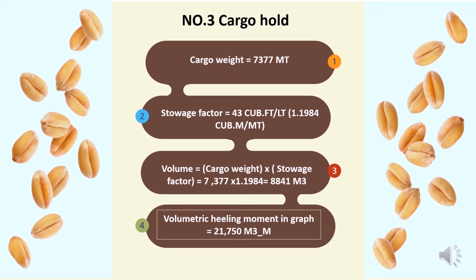To get the value of volumetric heeling moment for cargo hold number three, we need to know the volume of cargo inside the cargo hold. We only know the cargo weight, so by multiplying cargo weight by stowage factor, we will get the volume. Volume equals cargo weight times stowage factor. That means the volume will be 8,841 cubic metres. Using this value, we will move inside the curve and get the value of volumetric heeling moment.